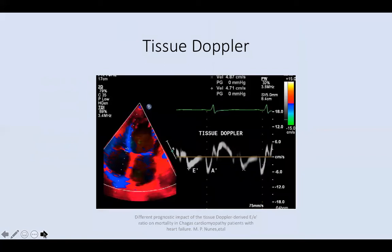What is tissue Doppler? When you get the four-chamber view, press TDI and put the cursor with the indicator on the mitral valve annulus at the septal level, then at the mitral valve annulus at the free wall. When assessing the RV, use the tricuspid valve free wall. You will get E prime, A prime, and S.